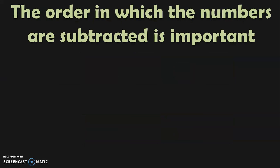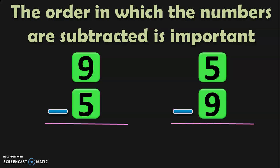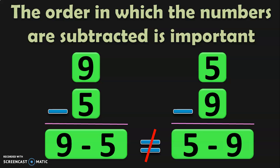This is a new property that you will be learning in class 2: the order in which the numbers are subtracted is very important. For example, 9 minus 5 is 4, but 5 minus 9 is not 4, which means 9 minus 5 is not equal to 5 minus 9. In addition, the order does not matter because adding 2 numbers in any order gives the same answer. But in subtraction, the order is important and they are not equal to each other.